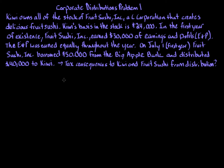In this video we'll consider the tax consequences of corporate distributions and look at a problem. This is corporate distributions problem 1. Kiwi owns all the stock of Fruit Sushi Inc., a C corporation that creates delicious fruit sushi. Kiwi's basis in the stock is $24,000. In the first year of the corporation's existence, Fruit Sushi Inc. earned $30,000 of earnings and profits (E&P), earned equally throughout the year. On July 1st, Fruit Sushi borrowed $50,000 from Big Apple Bank and distributed $40,000 of cash to Kiwi. Determine the tax consequences to Kiwi and Fruit Sushi from the distribution.